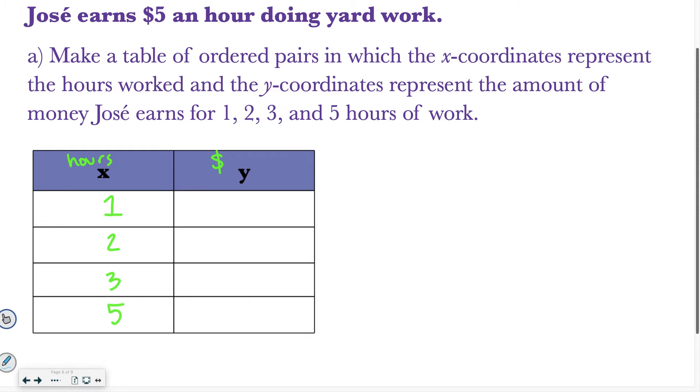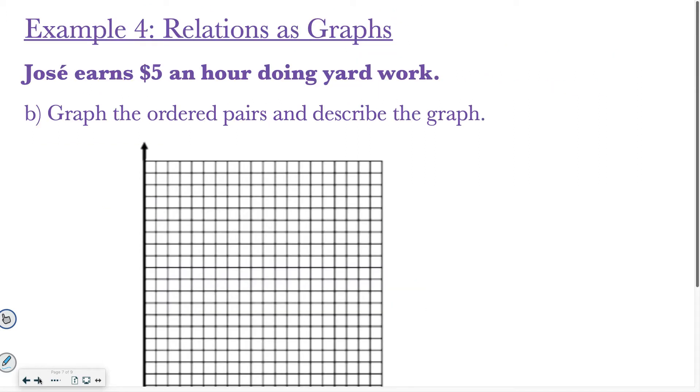All right. So if Jose earns $5 an hour and he works one hour, that means he earned $5. If Jose has worked two hours, he would earn $10. If he's worked three, it would be $15. And if he worked five, it would be $25. So my ordered pairs would be (1, 5), (2, 10), (3, 15), and (5, 25). That's what I'm going to graph on this next page here.